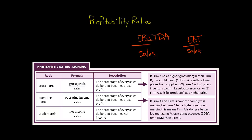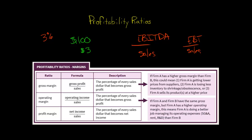In the numerator, we've got some measure of profit — whether it be EBITDA, gross profit, operating income, and so forth. So we've got some measure of profit divided by sales. Let's focus on the profit margin: net income divided by sales. If a company had a profit margin of 3%, that's telling us that for every $100 of sales, we're going to have $3 of profit.